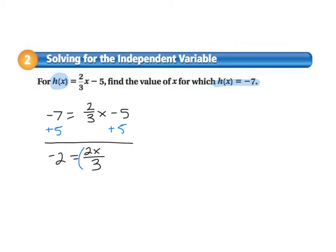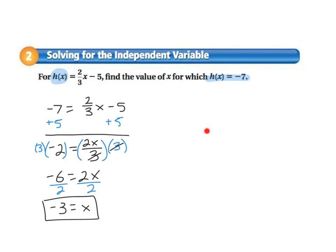So we got negative 2 equals 2 times x divided by 3. Remember, I can always put the x straight up into the numerator. 2 thirds x is the same as 2x over 3. And then I see division, so I'm going to do the inverse operation and multiply both sides by 3.